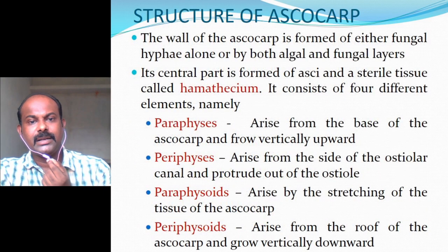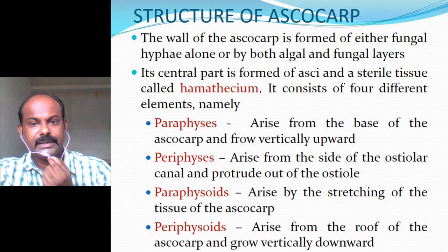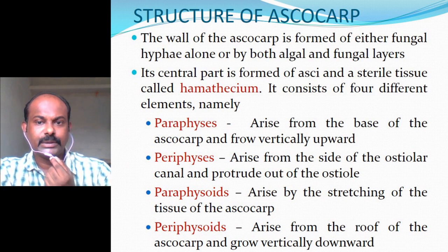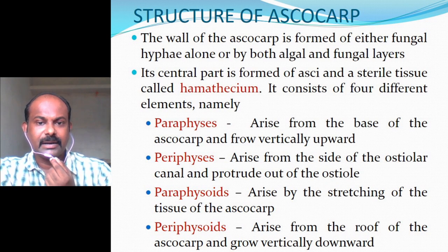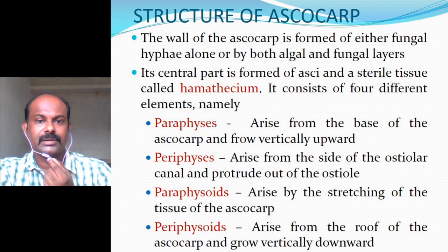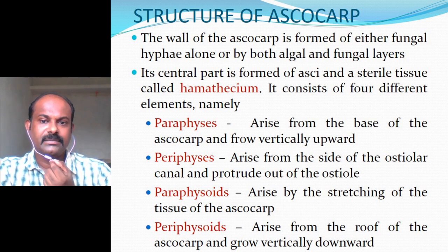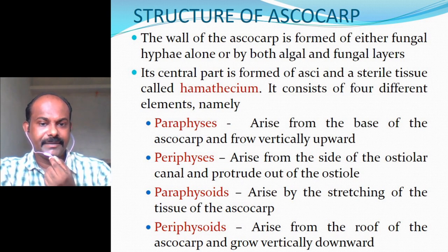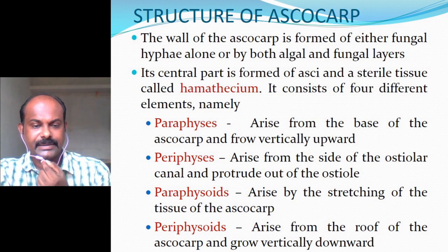Regarding the structure of the ascocarp: the wall is formed of either fungal hyphae alone or by both algal and fungal layers. Its central part is formed of asci and a sterile tissue called the hamathecium. Hamathecium consists of four elements: paraphyses, periphyses, paraphysoids, and periphysoids.